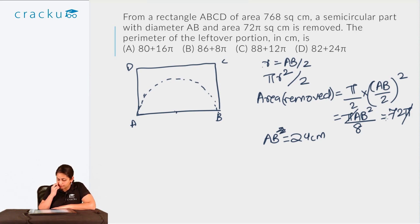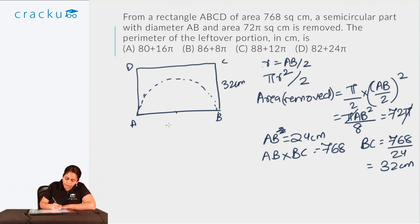If AB equals 24 centimeters and the area of the rectangle is 768 square centimeters, what would be BC? AB times BC equals 768. So BC is 768 divided by 24, that is 32 centimeters. So this is 32 centimeters, this is 24 centimeters. So what is the perimeter of the leftover portion? You have 32 centimeters on this side also, you have 24 centimeters on this side.